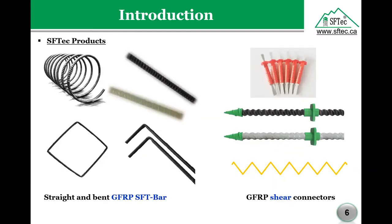We produce FRP bars, spirals, connectors, bent bars, and whatever shapes are needed. The most popular product is definitely the bars, and the most popular fiber is glass. The reason is that glass already has double or triple the tensile strength of steel, yet it is the cheapest in terms of cost compared to carbon and aramid. That's why GFRP glass fiber reinforced polymer bars are the most popular in the market today.